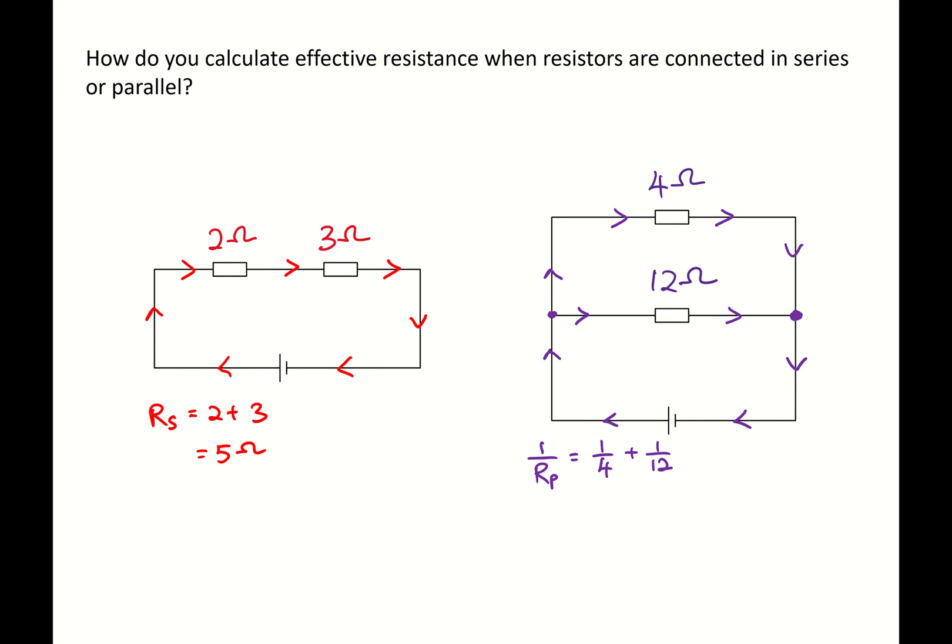Now I have to caution everyone here, the common mistake made by many students. And I'm going to show you now what's the common mistake. 1 over 4 plus 1 over 12 equals 3 over 12 plus 1 over 12 equals 4 over 12 equals 0.333 ohms. That will be the final answer by many students.